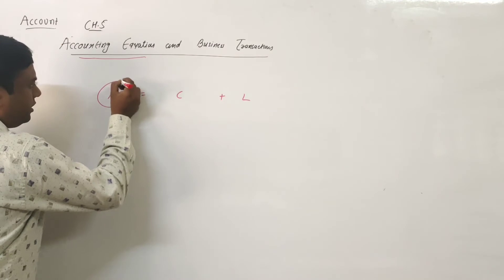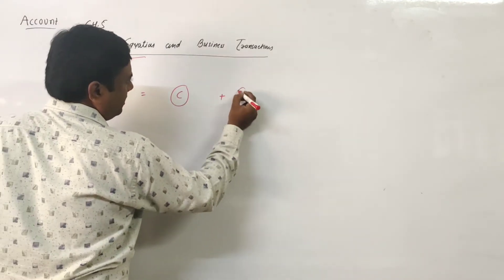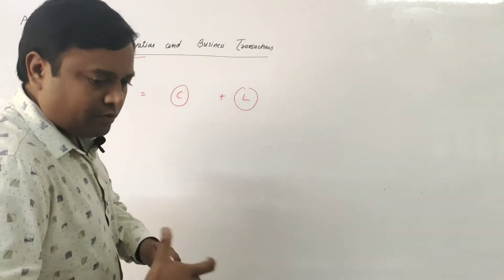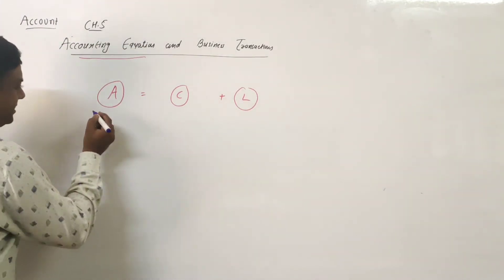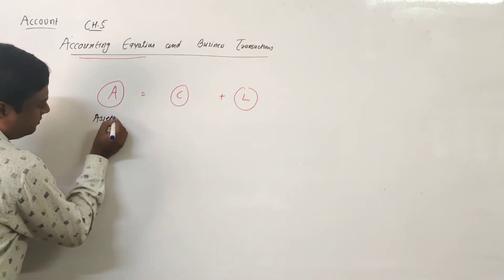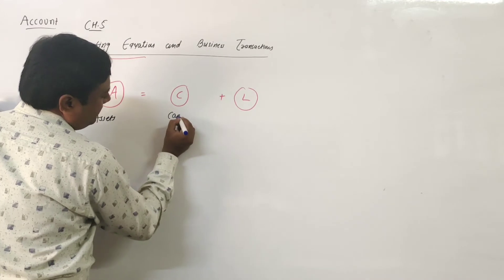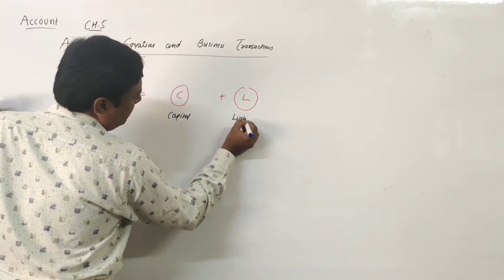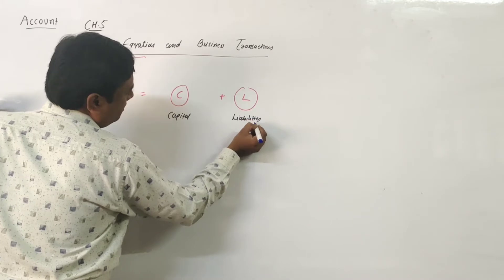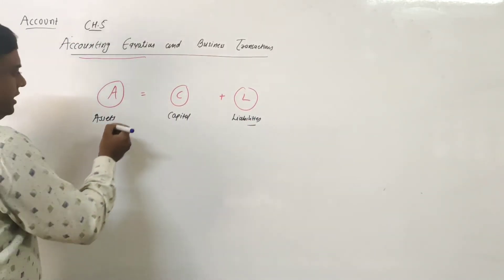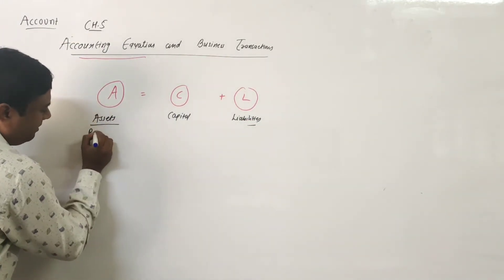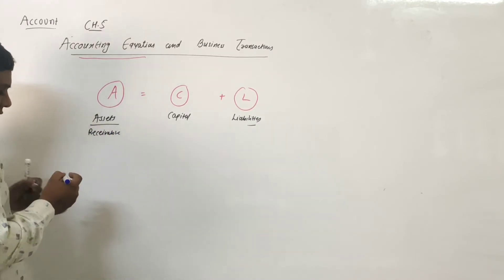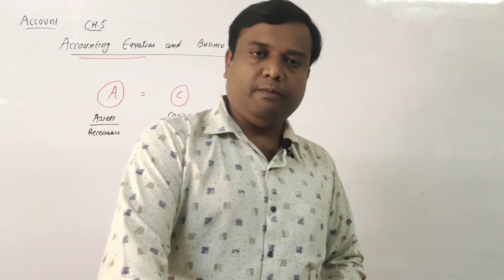Let me tell you the meaning of A, C, and L. A means assets. C means capital and L means liabilities. Assets can also be called receivables.